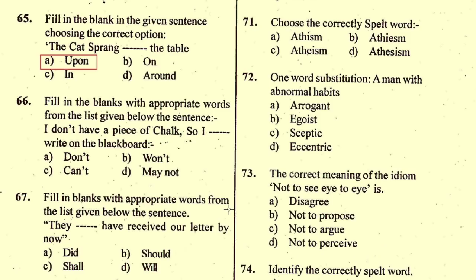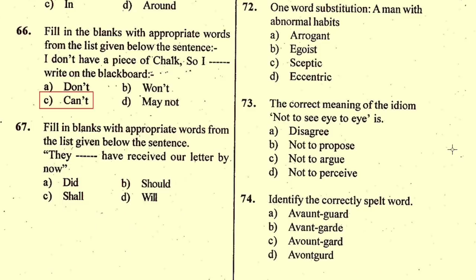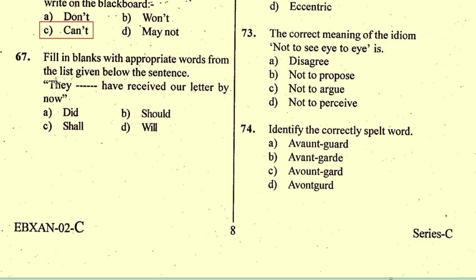Question number 66: Fill in the blank — 'I don't have a piece of chalk so I ___ write on the blackboard.' The correct word is 'can't', option C. Question number 67: Fill in the blank — 'They ___ have received it or later by now.' The appropriate word is 'should', option B. Question number 68: Fill in the blank — 'When I was young I ___ read without glasses.' The right word is 'would', option C.